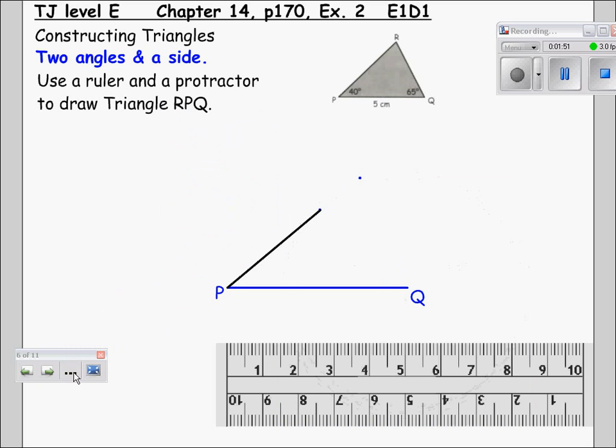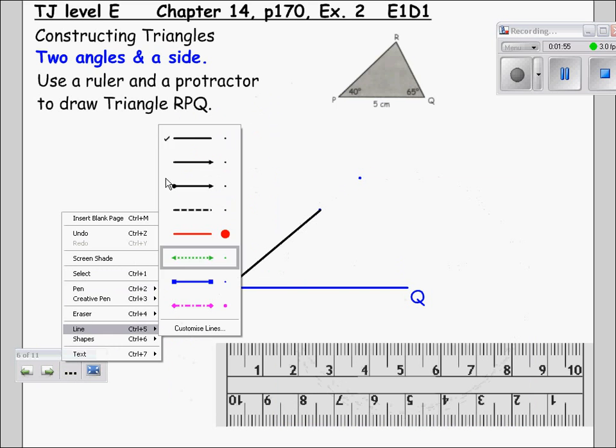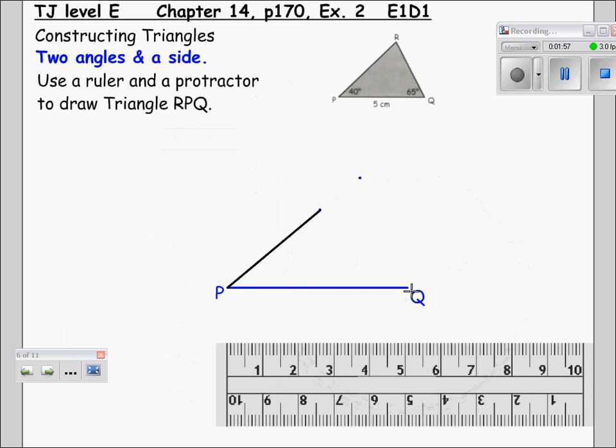Move your protractor away. As you did with the previous line, draw a line going from Q up to the point that you have just measured.